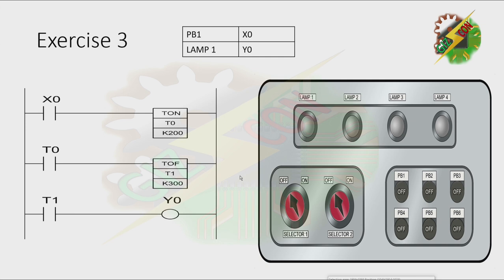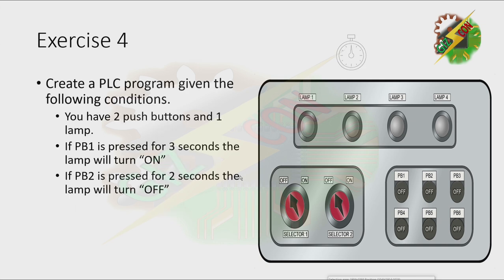Now let's go to exercise 4. Create a PLC program given the following condition. You have 2 push buttons and 1 lamp. If PB1 is pressed for 3 seconds, the lamp will turn on. If PB2 is pressed for 2 seconds, the lamp will turn off.